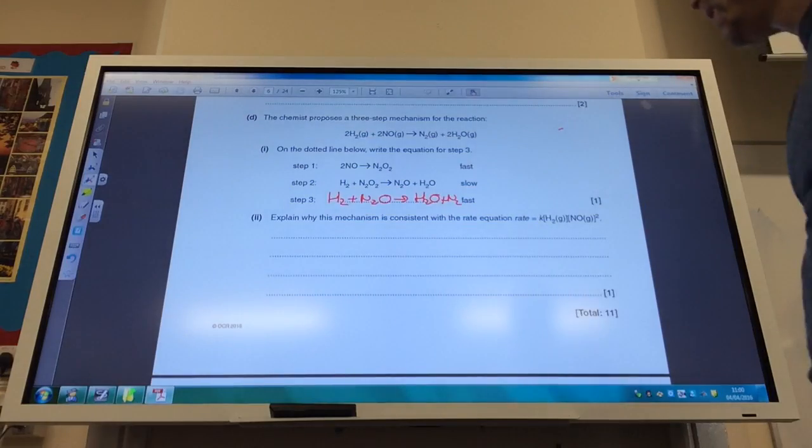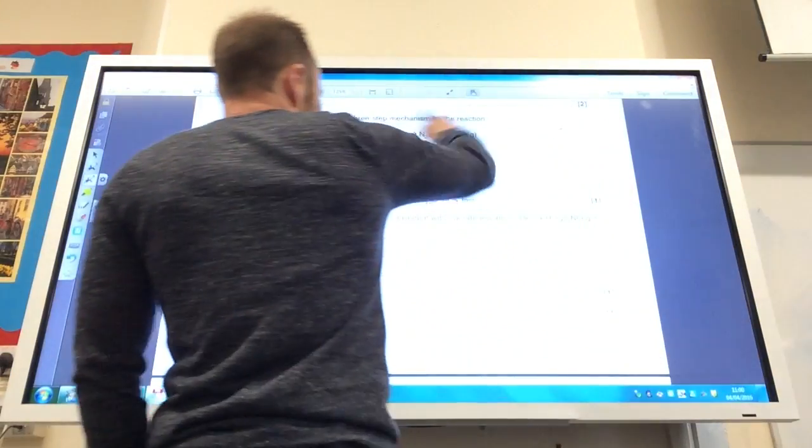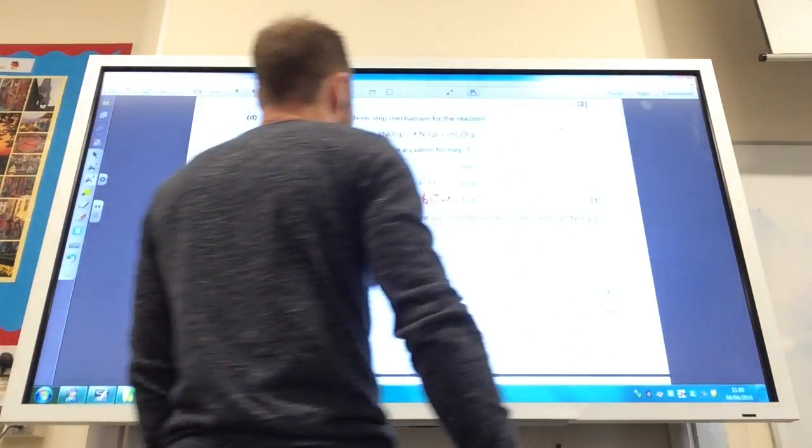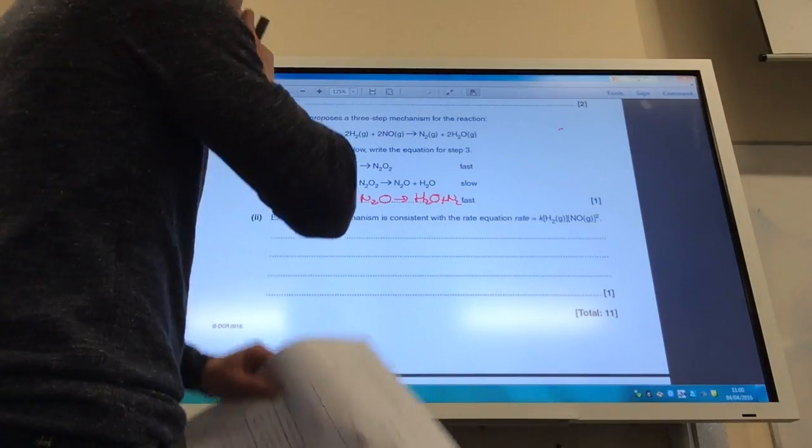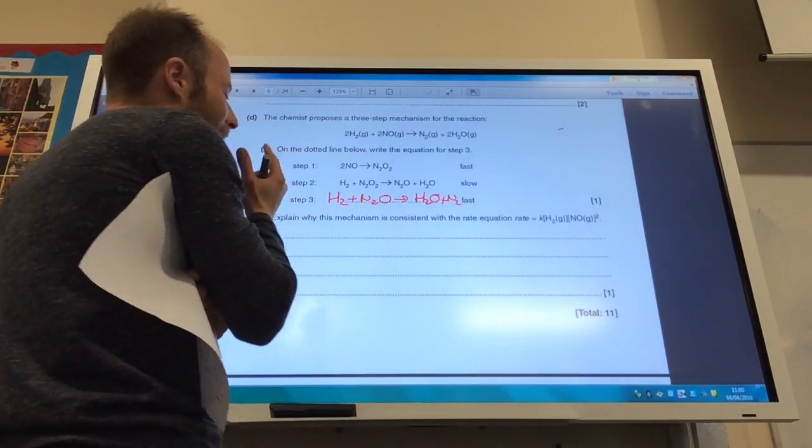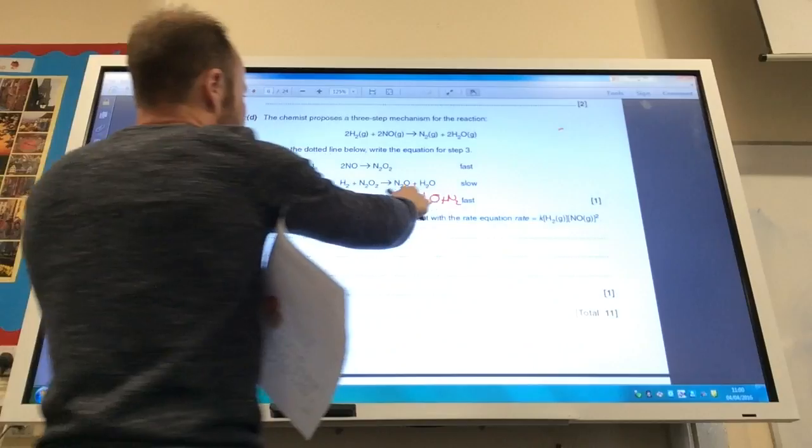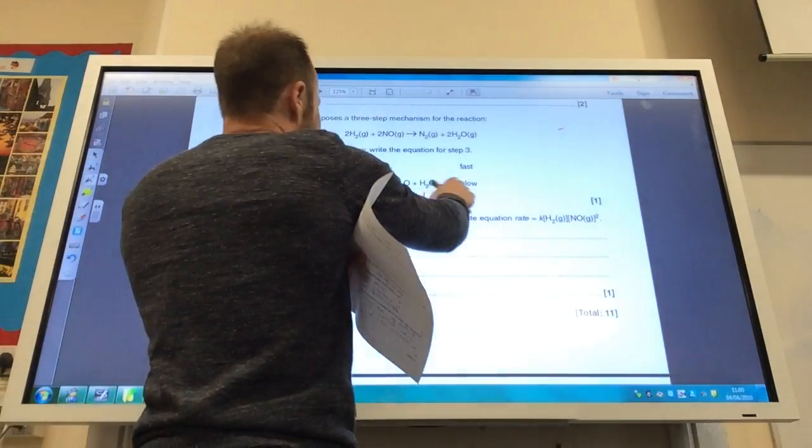Okay, so I'm now looking at why is this mechanism consistent with that rate equation? Well, let's have a look. My slow step is here in step two. And to get to step two, step two for my slow step involves H2, one H2, so that's good because there's one H2 here.